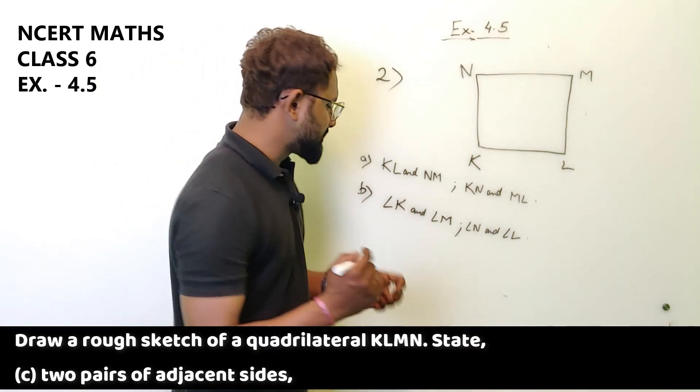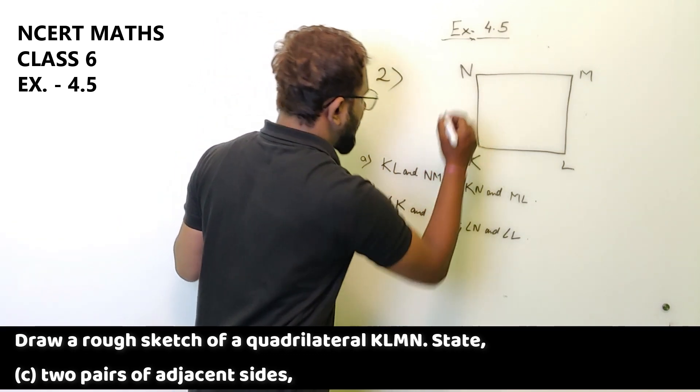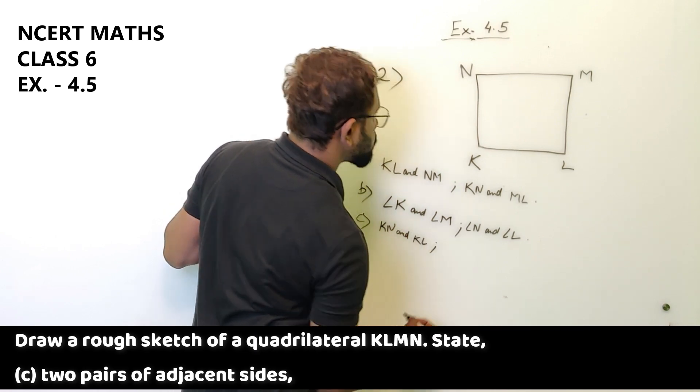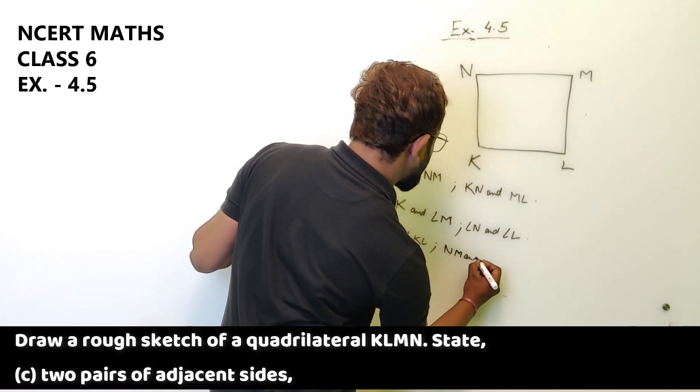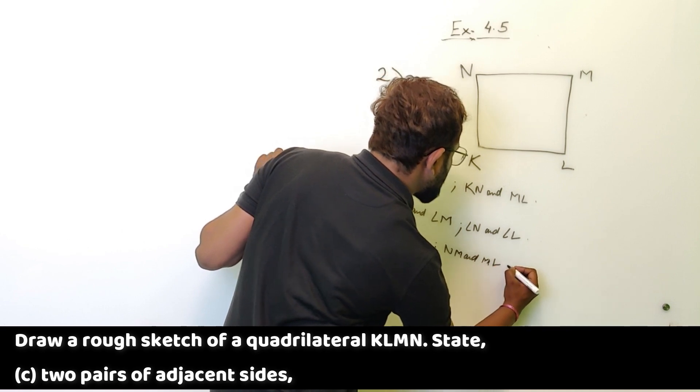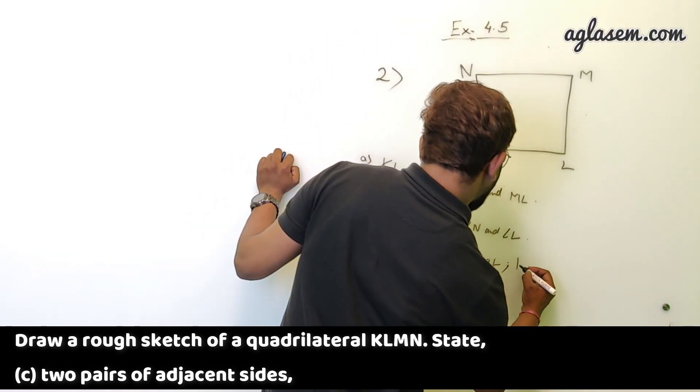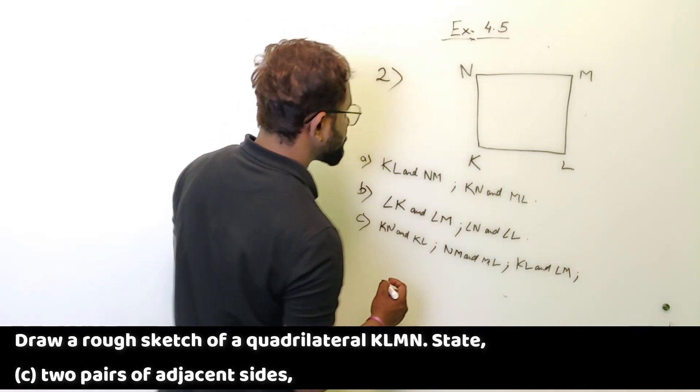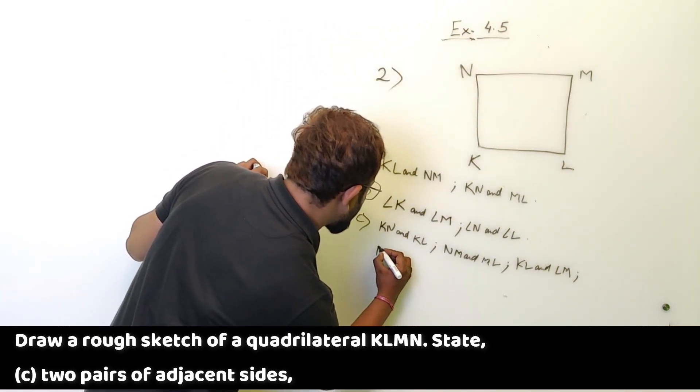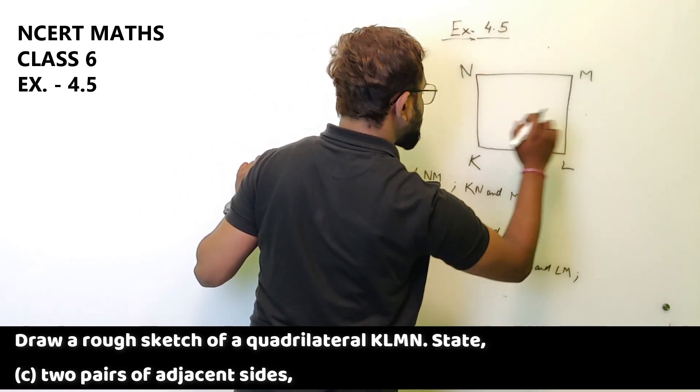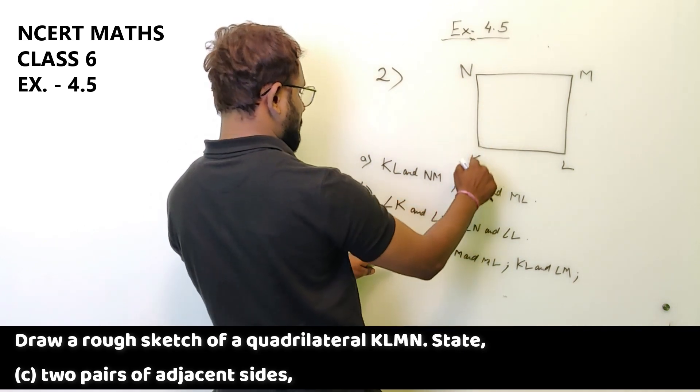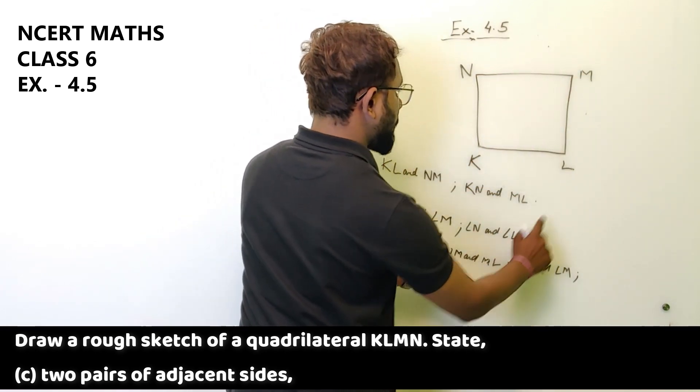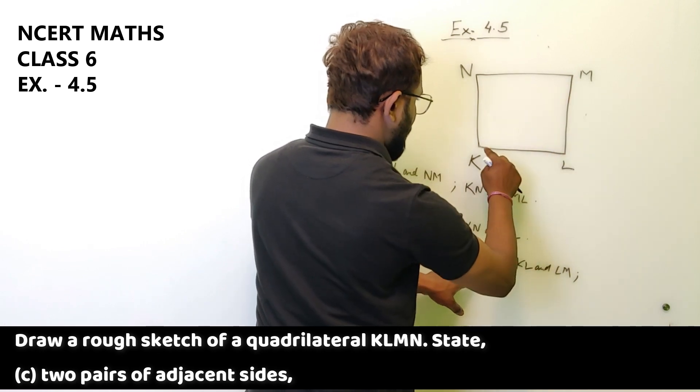Two pairs of adjacent sides, C part. Two pairs of adjacent sides are KN and KL, also NM and ML, also KL and LM. We have written NM and ML. We have started from KN and KL. So these are the answers.